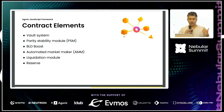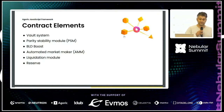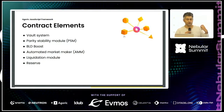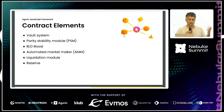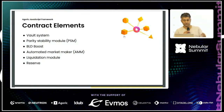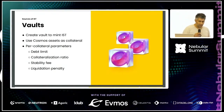The components: we have the vault system, which is a CDP system. We have a parity stability module — similar to how DAI fluctuates between being backed by USDC versus ETH and other liquid assets. We have BLD Boost, a mechanism by which you can get small amounts of IST if you're a staked holder of the staking token on the Agoric platform. We have a native AMM, a liquidation module plugged into that AMM, and a stability reserve as a fallback mechanism under extreme volatility.